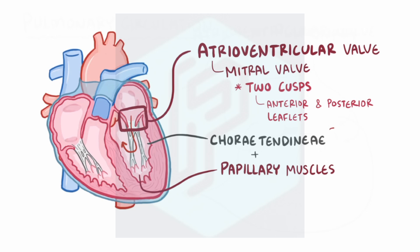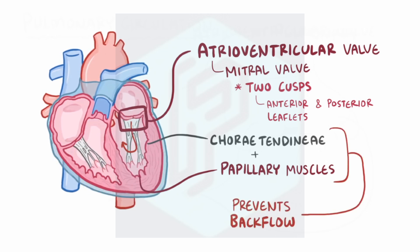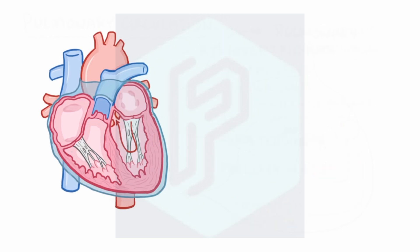Similar to the right side of the heart, when it contracts, this prevents blood from going backwards. Finally, blood in the left ventricle gets pumped out through the aortic valve, which normally has three cusps, out to the aorta, the largest artery in the body.